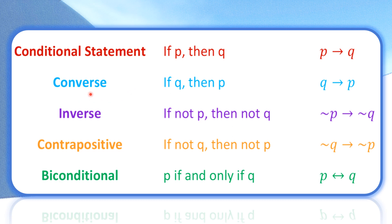Ngayon, tag-uusapan natin ang converse, inverse, contrapositive, at biconditional. So kung sa conditional statement meron tayong if P, then Q, dito naman sa converse, pagpapalitin natin ang posisyon ng conclusion at ng hypothesis. So magiging if Q, then P.